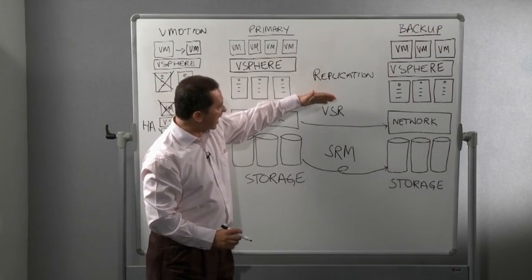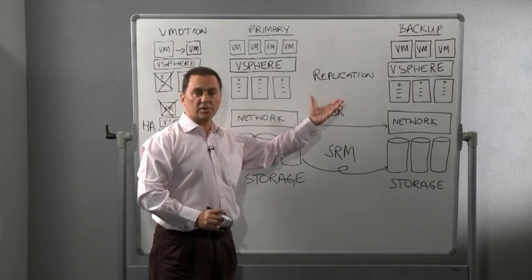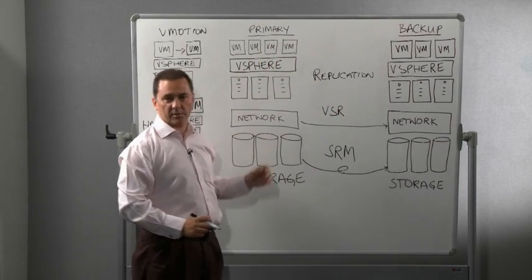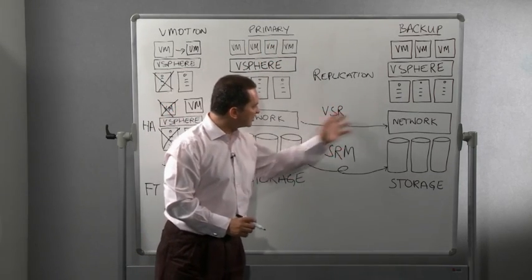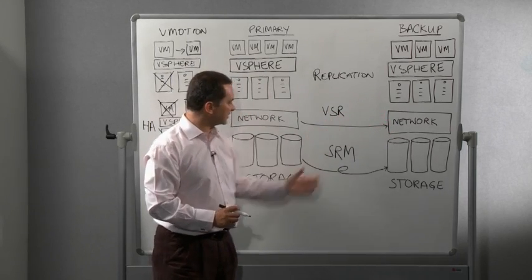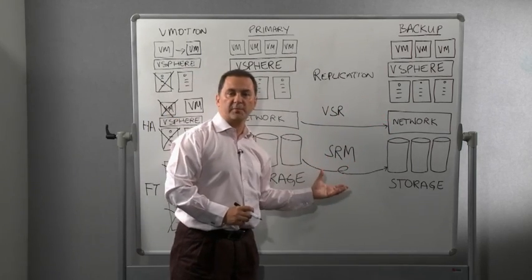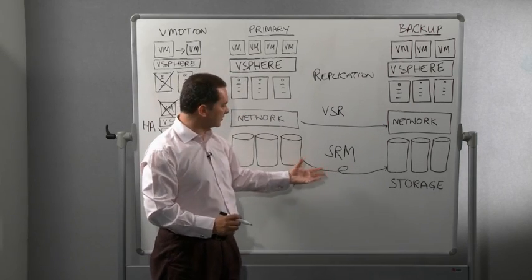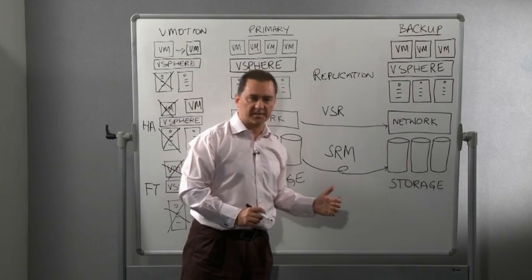So, you can choose to have vSphere replication to use for your lower priority workloads, and that allows you to have a backup recovery objective of about 15 minutes. And Site Recovery Manager can be used for your high priority workloads, which allows you to have much faster backup capabilities.